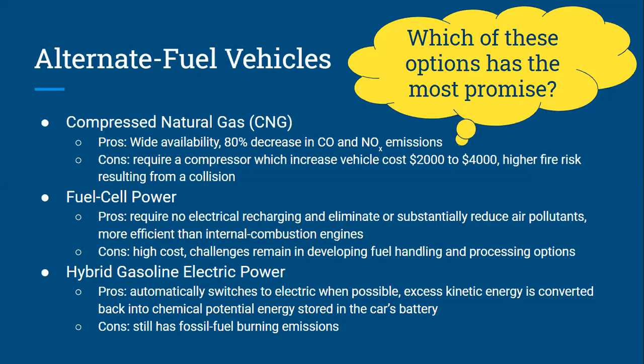Another option is fuel cell power. Pros: there's no electrical recharging required, it eliminates or substantially reduces air pollutants, and it's more efficient than an internal combustion engine. Cons: high cost and challenges remain in the development of fuel handling and processing options — some tweaking still needs to happen. The third option is hybrid gasoline-electric power — the hybrid cars you see on the market now. Pros: they automatically switch to electric power when possible and use any excess kinetic energy, converting it back to chemical potential energy stored in the car's battery. Con: there are still some fossil fuel burning emissions when operating in fossil fuel mode.